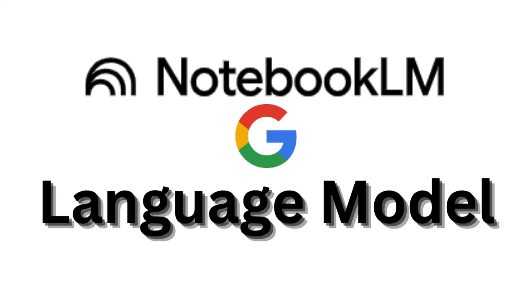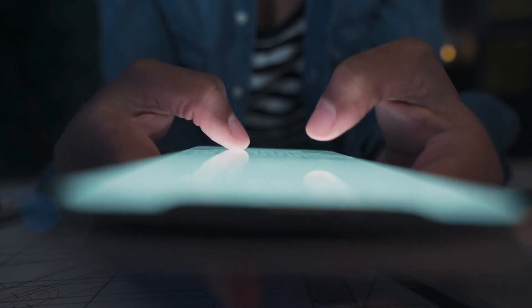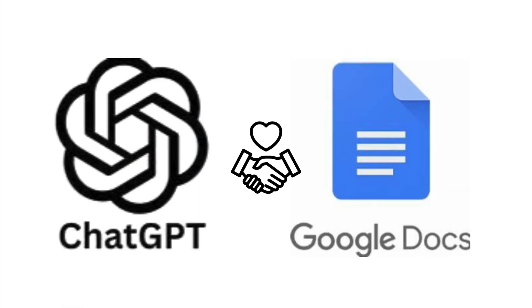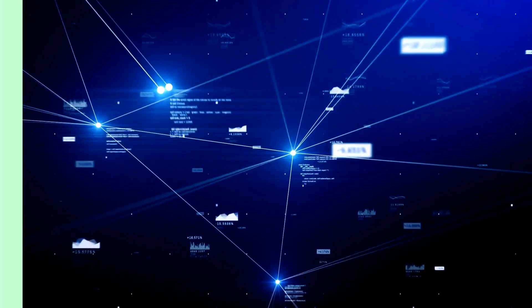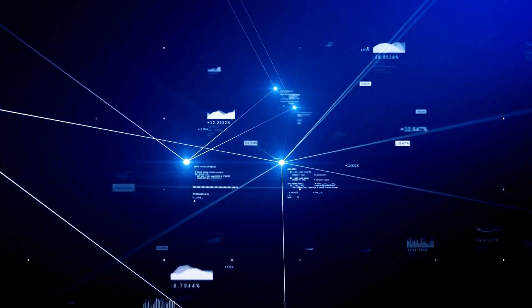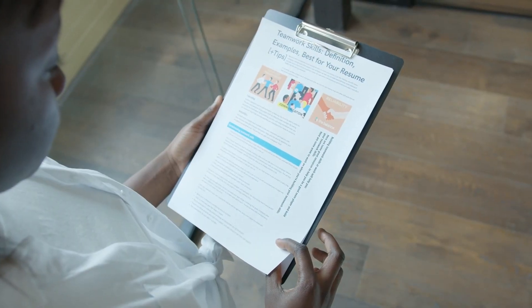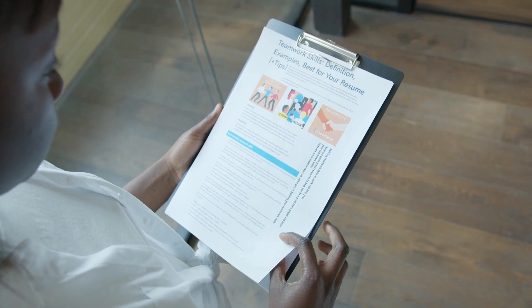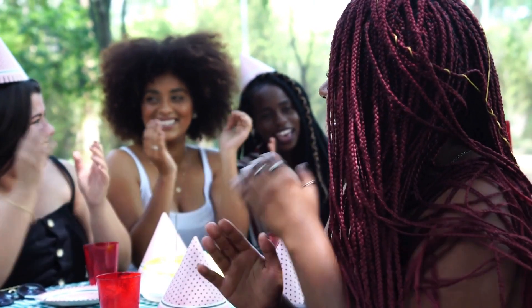Notebook LM stands for Language Model. It's an experimental Google AI tool that acts like a smart assistant living inside your notes. Think of it as ChatGPT meets Google Docs, but way more focused and personalized. You upload your sources — docs, PDFs, meeting notes, articles — and Notebook LM becomes an expert on your content. It doesn't just generate text. It reads, understands, and helps you synthesize your own ideas.